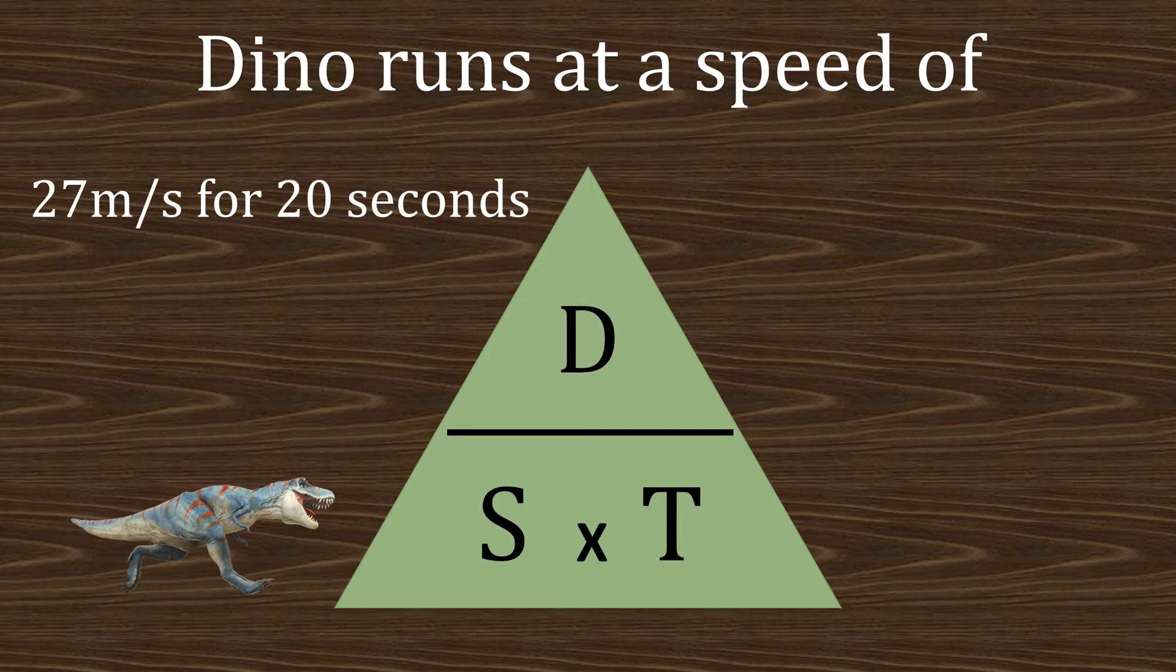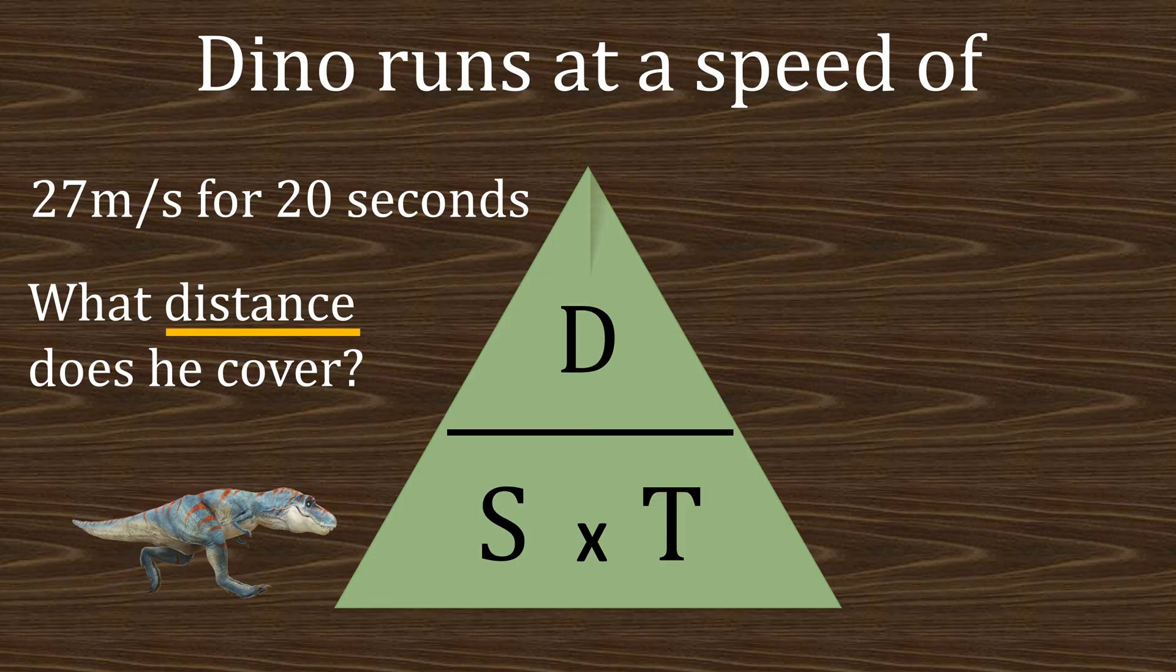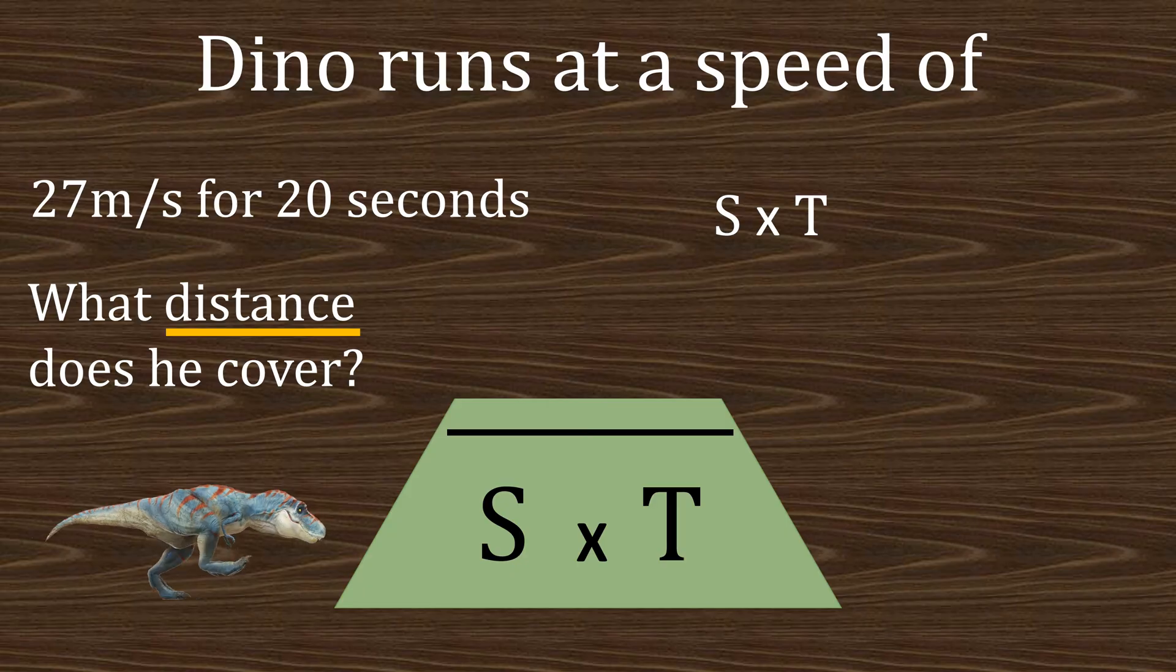of 27 meters per second for 20 seconds. Question: what distance does he cover? So they're looking for the distance, so we cover this up in the formula triangle and it leaves us with speed multiplied by time. So the